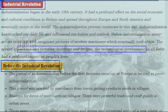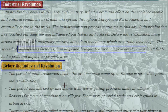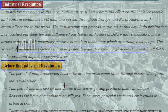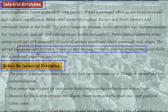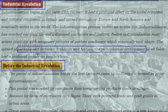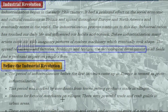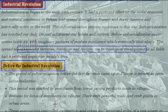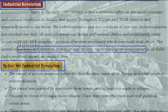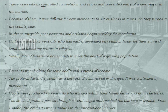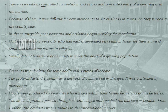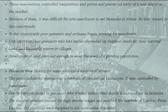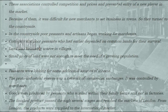The spread of railways, factories, buildings and bridges — the technological development in all fields had a profound impact on people's life. Before the industrial revolution, the period of industrialization before the first factories came up in Europe is termed as proto-industrialization. This period was marked by merchants from towns getting products made in villages. These merchants had powerful trade and craft guilds in urban areas which controlled competition and prices and prevented entry of new players in the market.